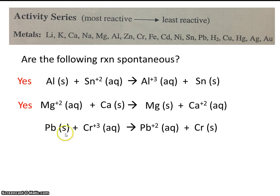How about this one? Is this reaction spontaneous? Well, let's find lead, our metal, that's right here. And then let's find chrome, our metal ion, that's up here. So in this case, it looks like our metal ion is more reactive. So this reaction will not be spontaneous.